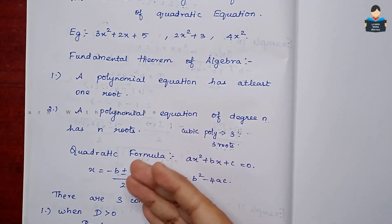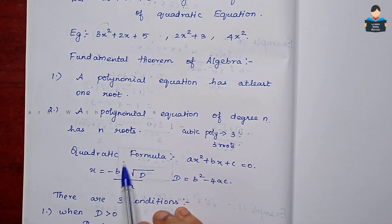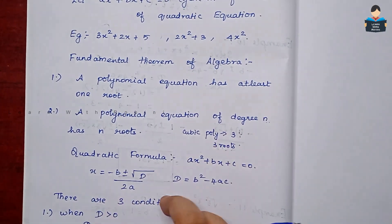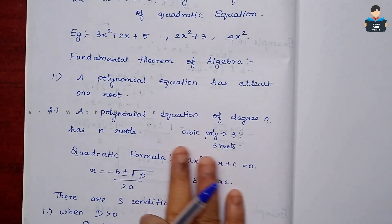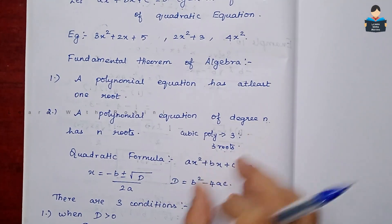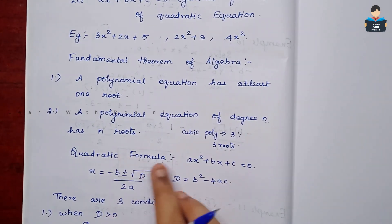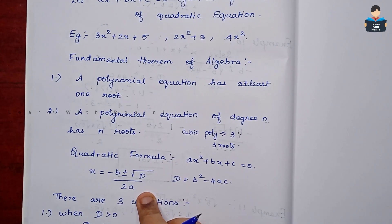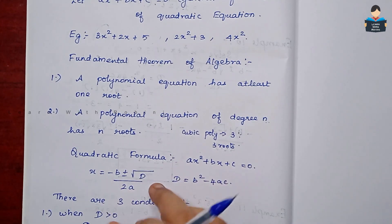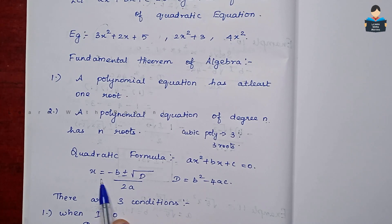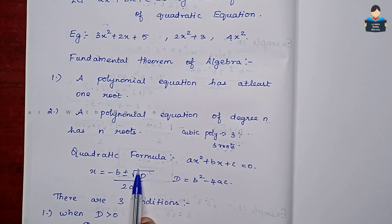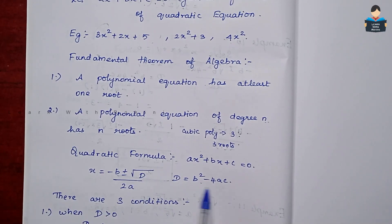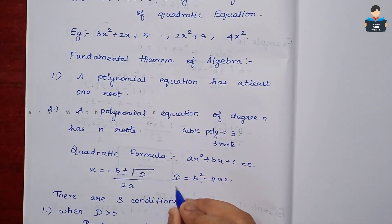Now, to find the roots of a quadratic equation, we use the quadratic formula: x is equal to minus b plus or minus square root of D, divided by 2a. Here D is the discriminant, where D equals b squared minus 4ac.